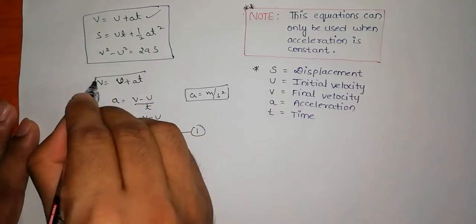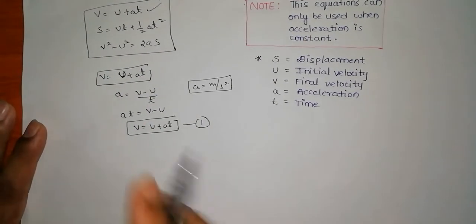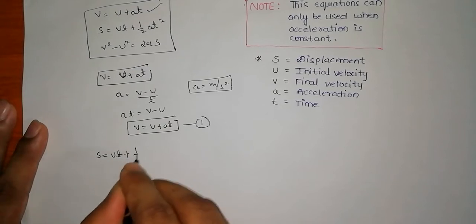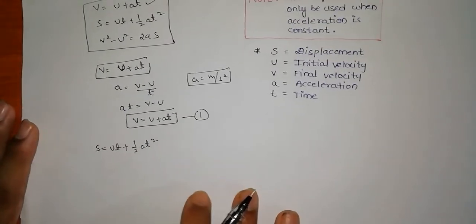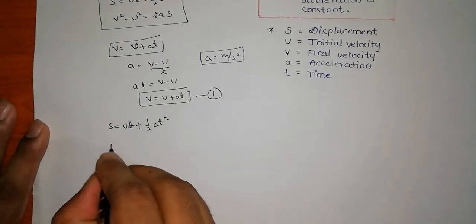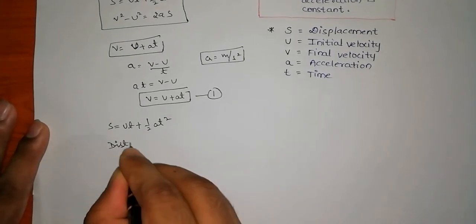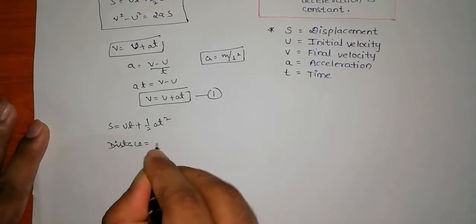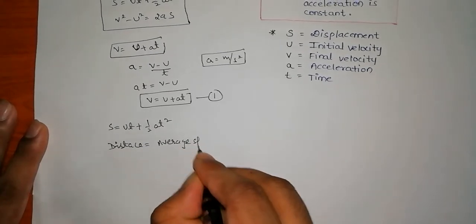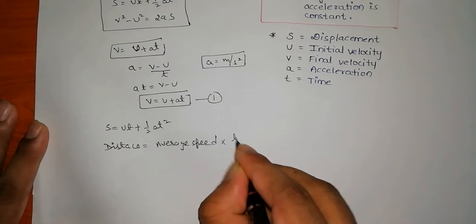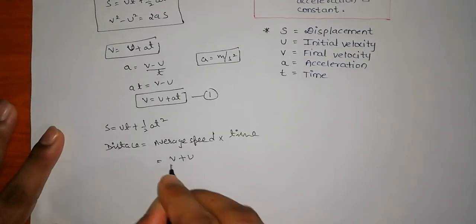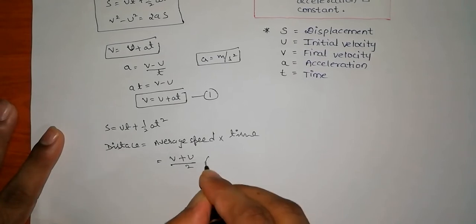Now let us derive the second formula: S = UT + ½AT². S is displacement. As you know, distance equals average speed multiplied by time. Average speed is (V + U) / 2, so S = (V + U) / 2 × T.